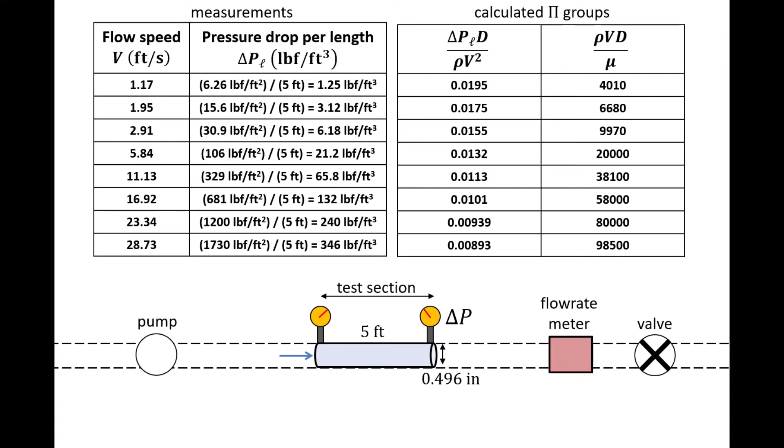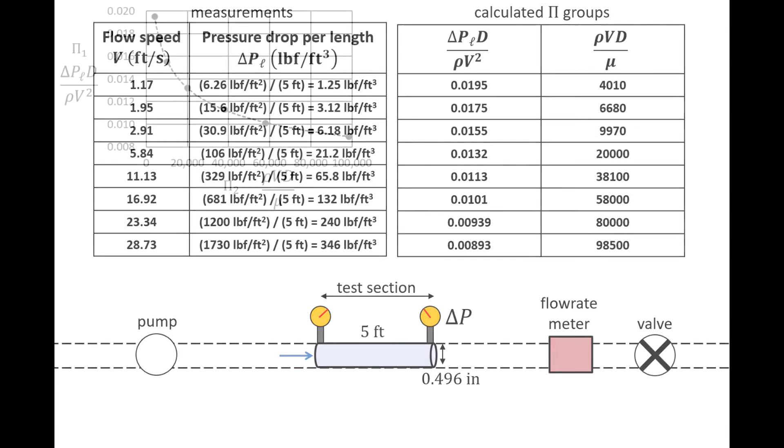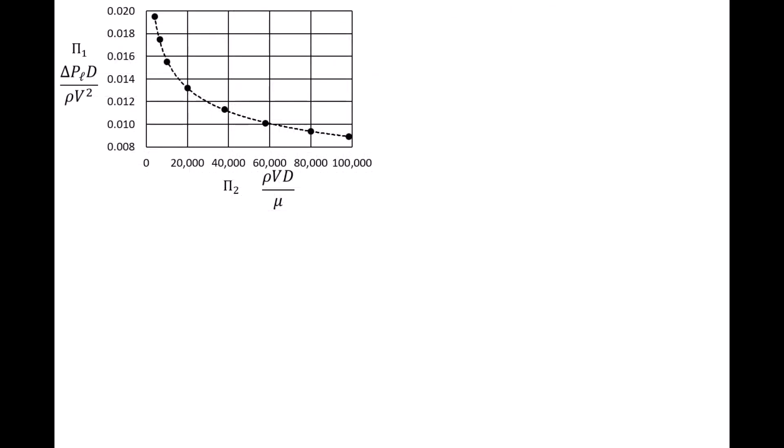Now that we have this experimental data, we can find the functional relationship between the pi groups. We can use some software, like Excel, to plot the dependent pi group pi 1 versus the independent pi group pi 2. Then we can try to apply a best-fit curve to this data. Now simply by looking at the data, it's clear that the relationship between the pi groups is not linear, as a straight line would fit the data quite poorly.